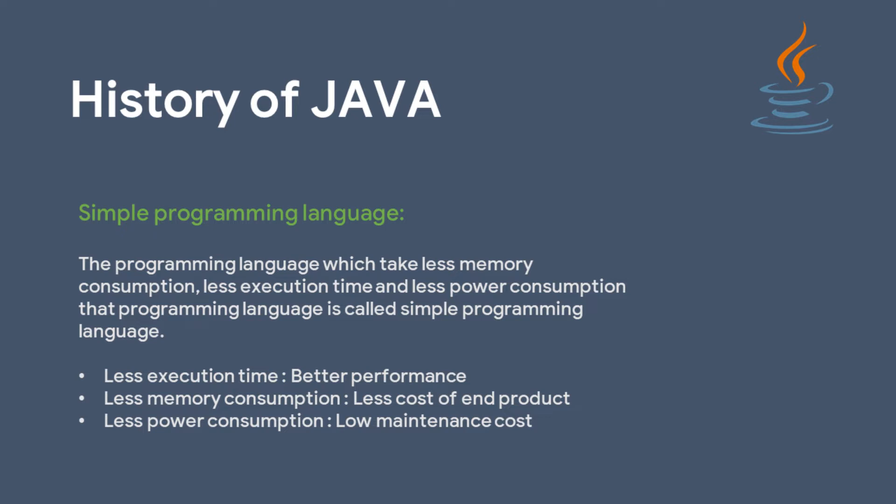So now you have to pay 4,000 extra to get 8GB of RAM to execute software that takes a lot of memory. Sun Microsystems did not want their customers to pay a lot of money to execute their programs. They wanted the programming language to take less memory. The benefit is that if the programming language takes less memory, the cost of the end product decreases — from 20,000 back to 16,000.